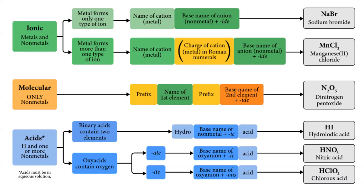For molecular covalent compounds, we just say however many of them we have and put the less electronegative element first - so oxygen is almost always going to be the second element you say. You use the numerical prefixes. N2O5 would be dinitrogen pentoxide. If you write pentaoxide instead of pentoxide, I'm not going to mark you wrong because it's irregular and it doesn't interfere with someone knowing what you're trying to say.